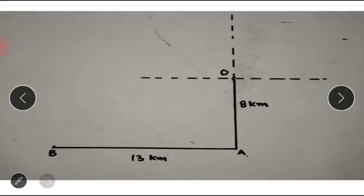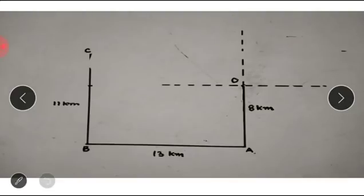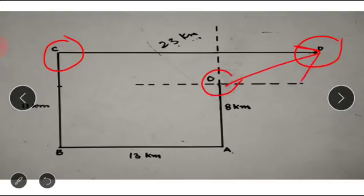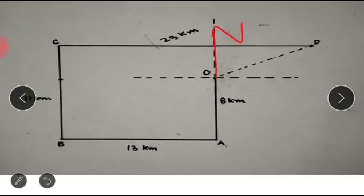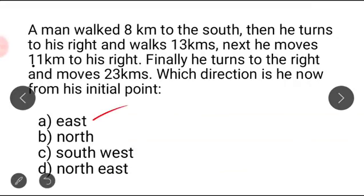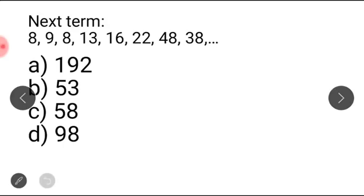When he faces south, his right is towards west, so he moves 13 kilometers west to point B. At point B he turns right — when facing west, right is north — and moves 11 kilometers. At point C he moves again to the right, which is east, and finally reaches point D. Since D is between north and east, the answer is northeast — option D.